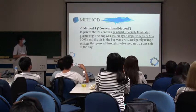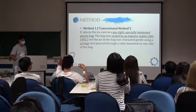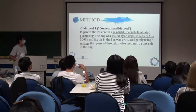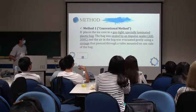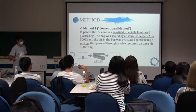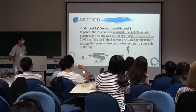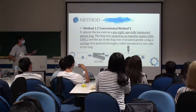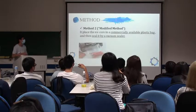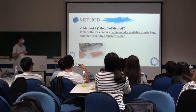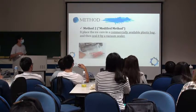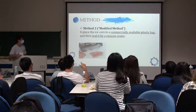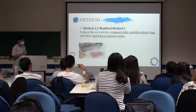The conventional method: we place the ice core in a gas-tight, specially laminated plastic bag. The bag was sealed by an in-house sealer, and the air in the bag was evacuated using a syringe through a valve mounted on one side of the bag, taking several minutes. For the modified method, the ice core is placed in a commercially available plastic bag, then sealed by a vacuum sealer — taking just a few seconds.